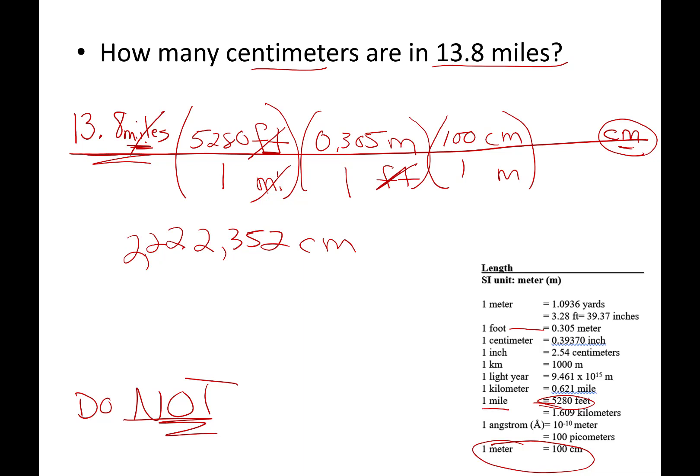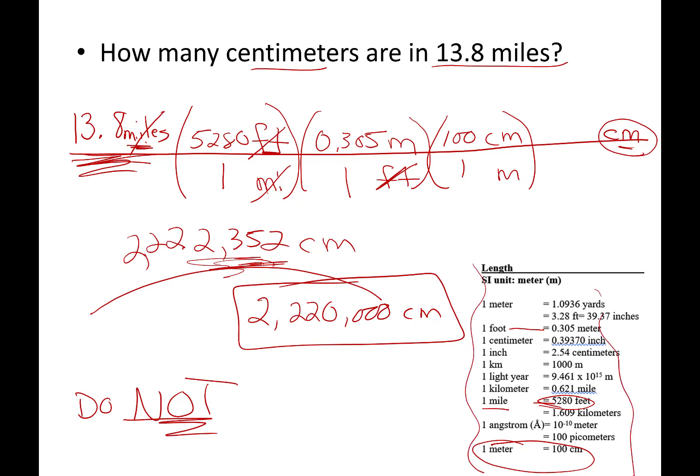We'll talk more about significant digits in the future. But we started with three digits, I'm going to round this to three digits. So this is going to be 2,220,000 centimeters. If you choose a different path, you might have a slightly different answer down here because some of these conversion factors have been rounded so that they don't go on forever. But when you round them to the correct number of significant digits, you will always get the same answer.